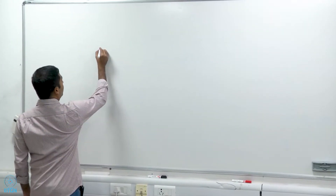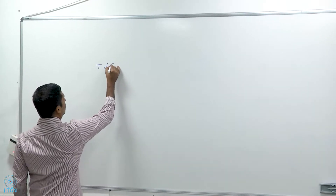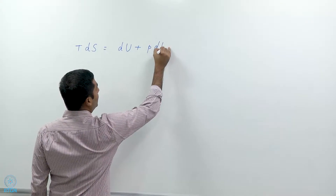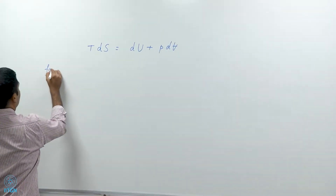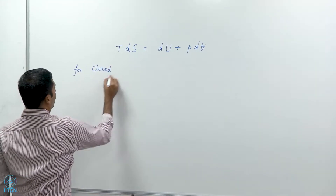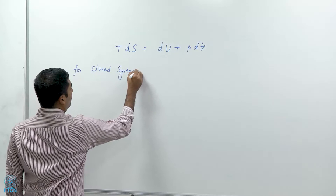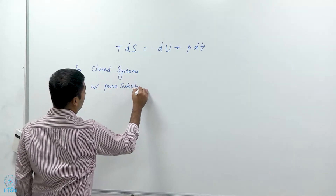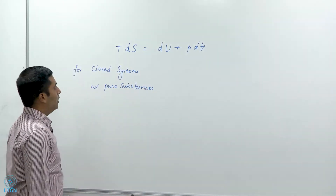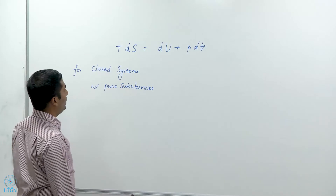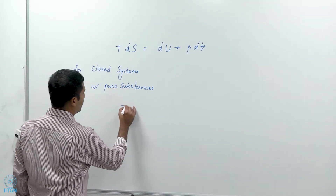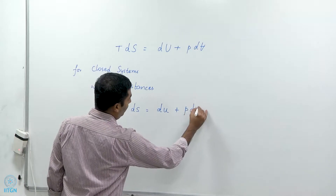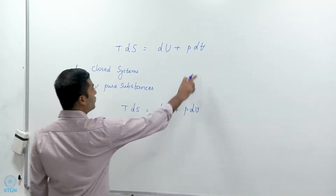What we had was T ds equals du plus p times dv, for closed systems with pure substances. We can also write this in specific terms as T ds equals du plus p dv, where v is the specific volume, this being the total volume.